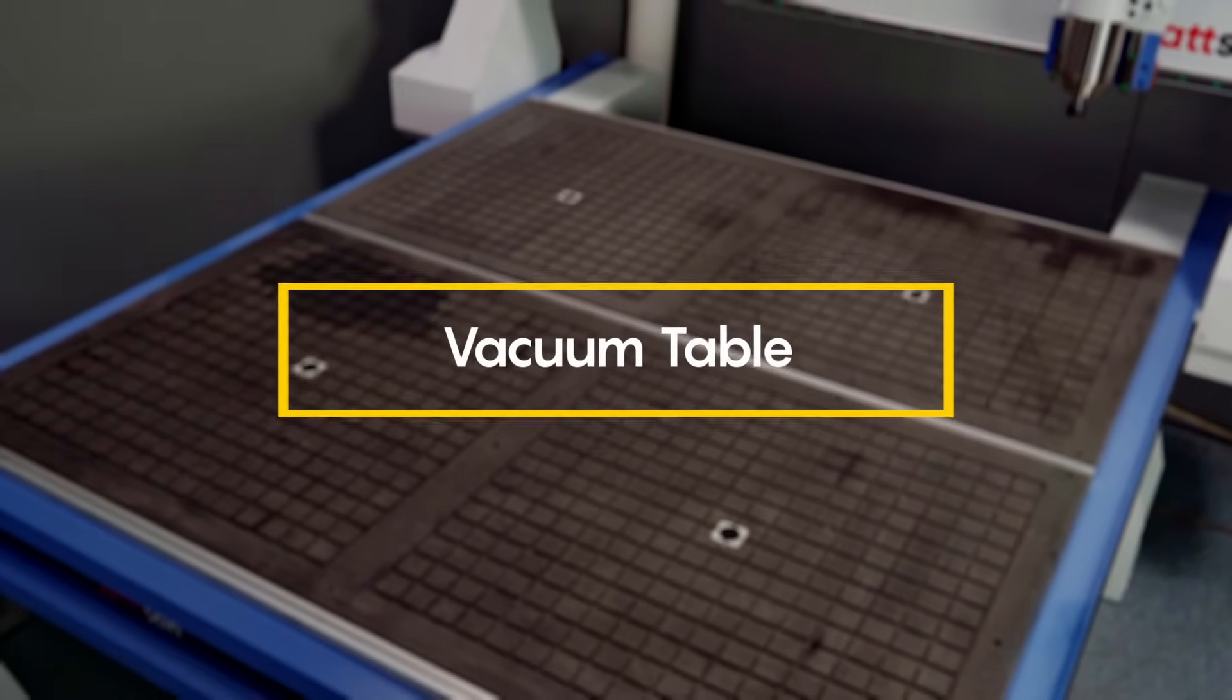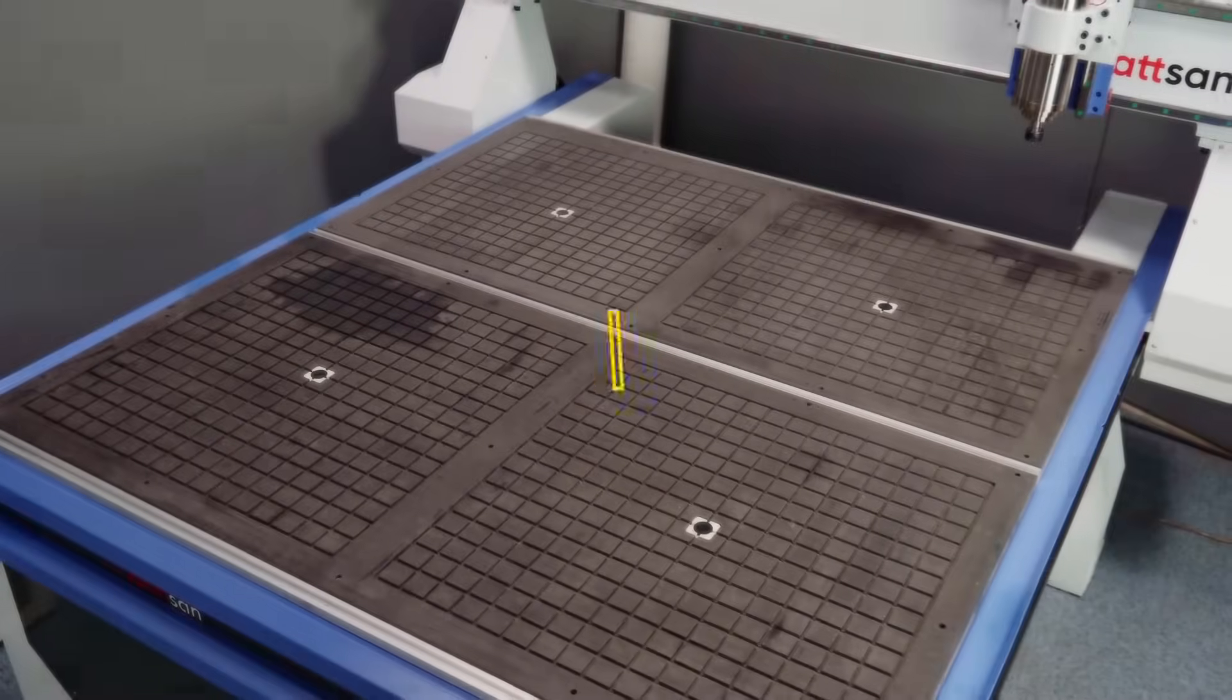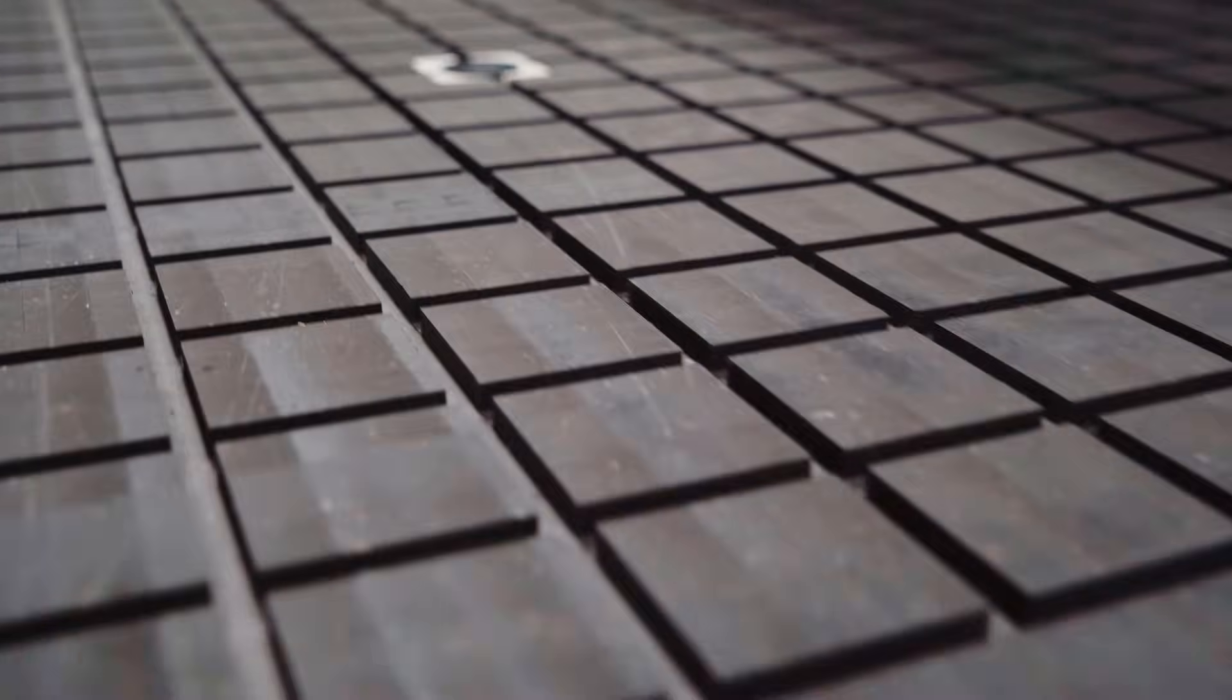Vacuum table. The vacuum table uses pumps to hold the workpiece on the machine's work surface through special holes.